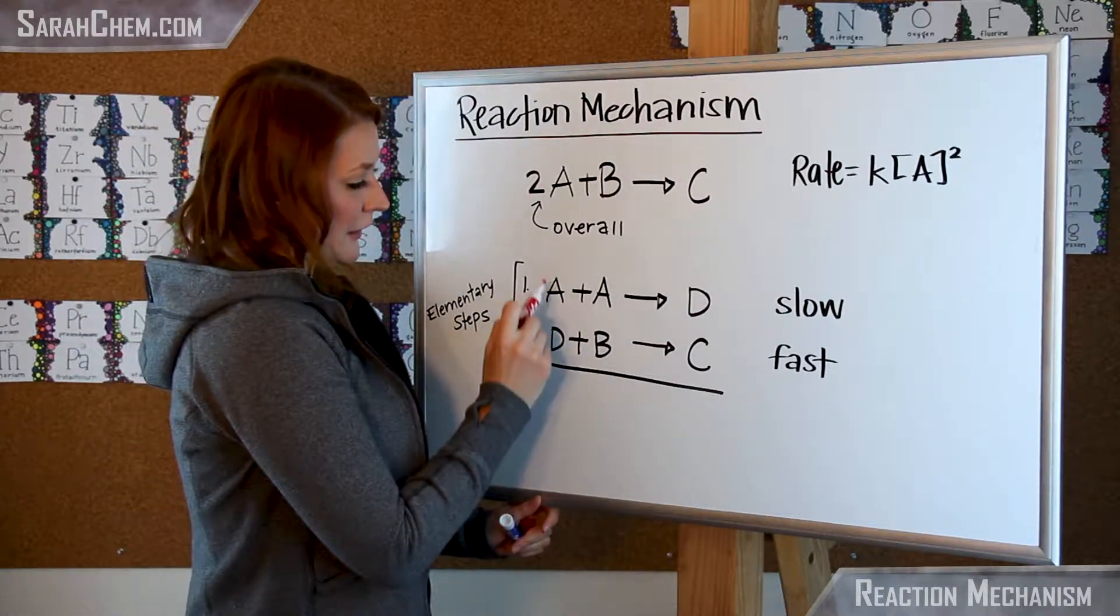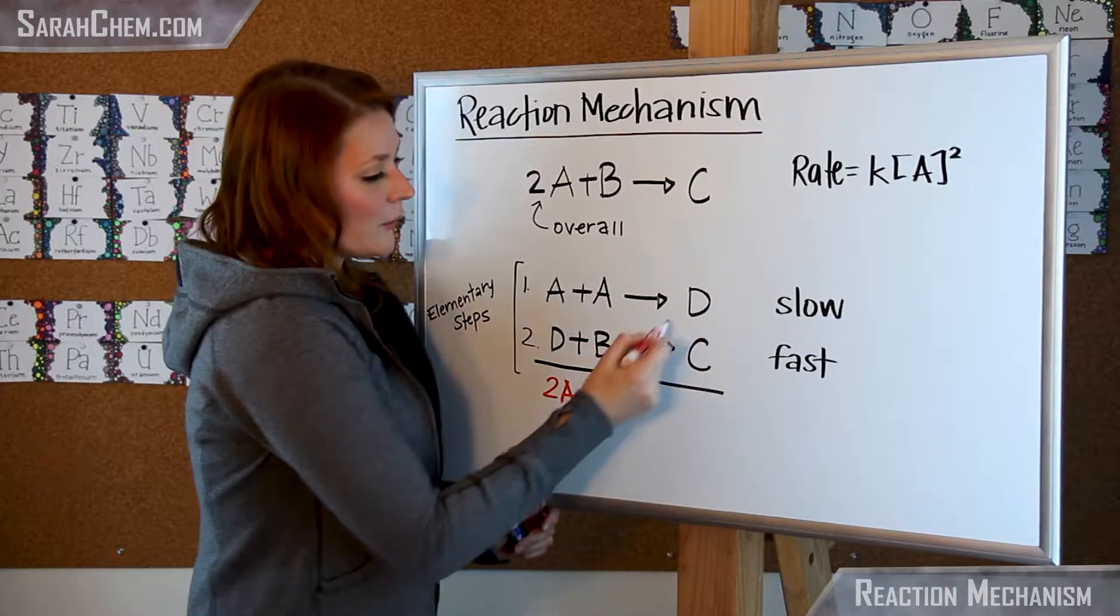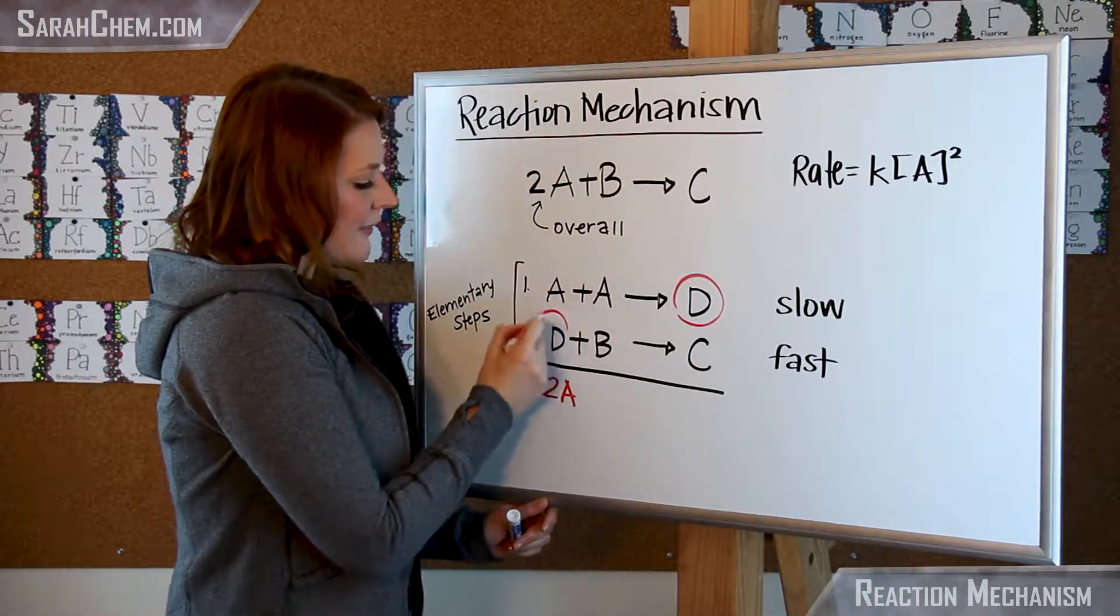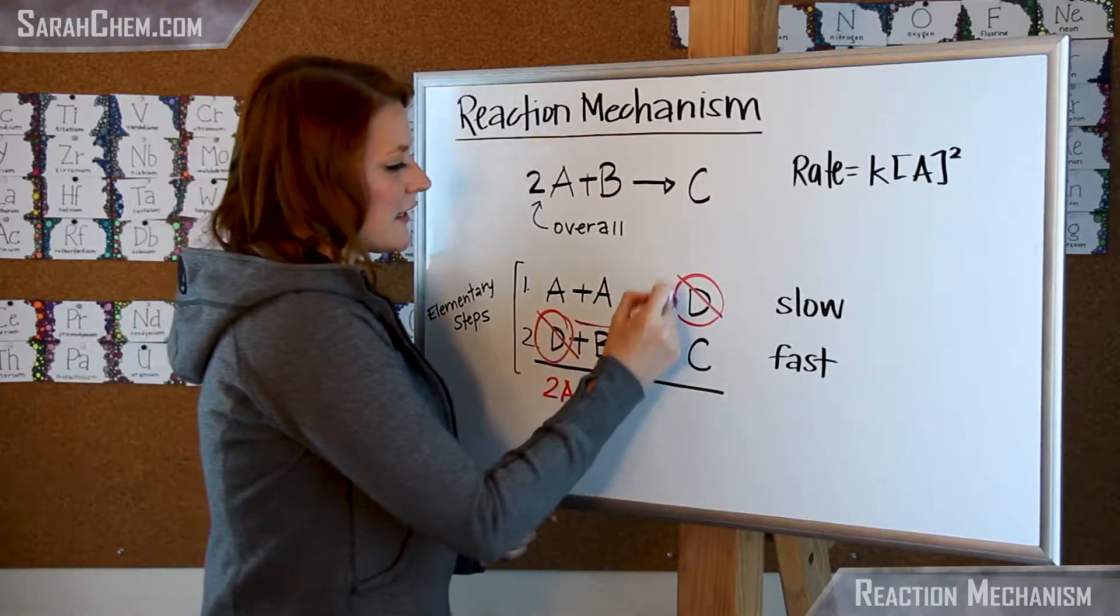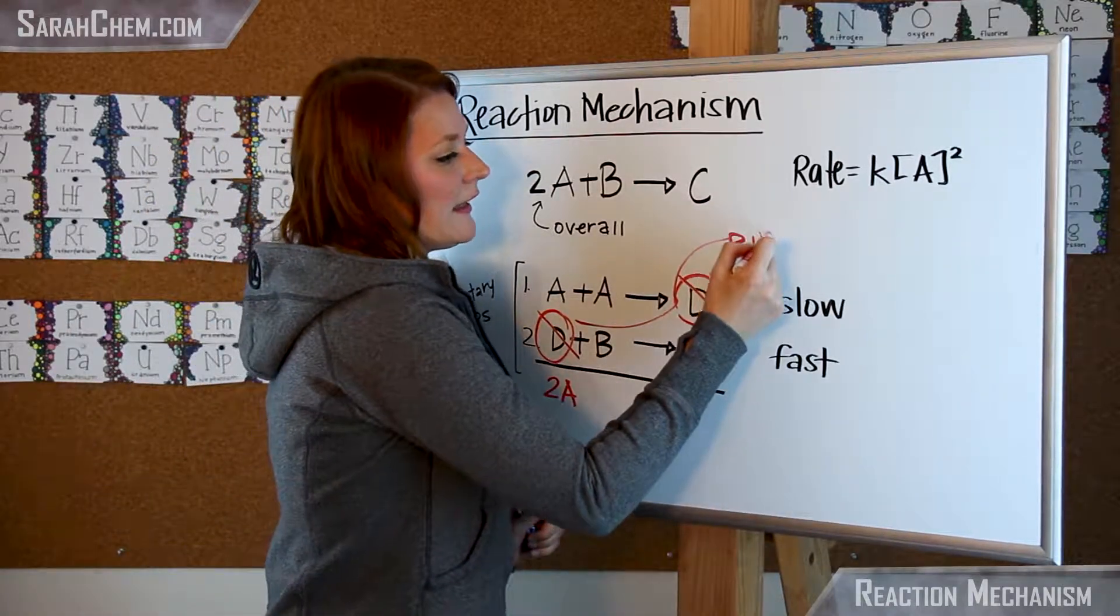If I take a look at this here, I have two A's. Now you can see here, D is a product and then D is a reactant. So that means it cancels out. In the context of these, I would call D an intermediate.